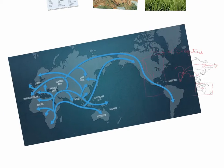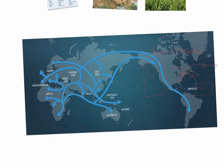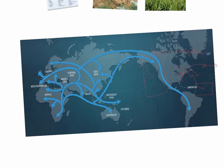Here is a much more detailed picture of how human migration happened. You can see that things started from East Africa, moved into India and then the rest of Asia, and then moved into the Americas and on to Australia.